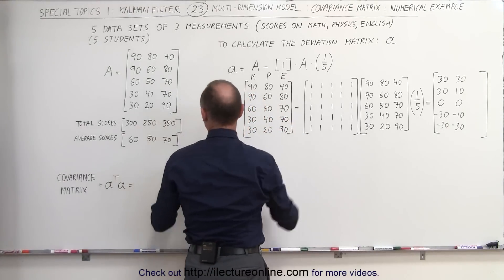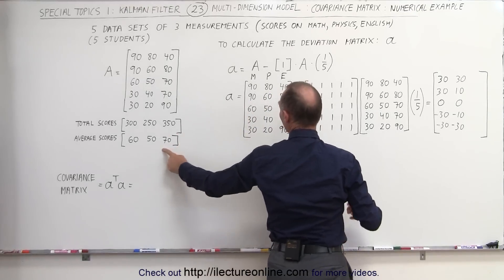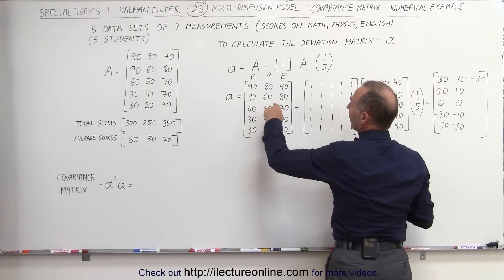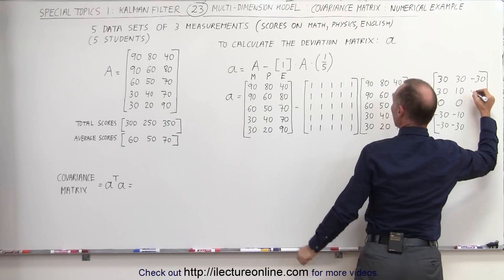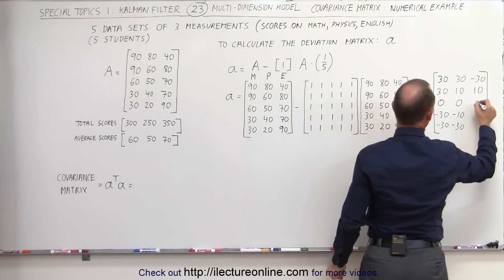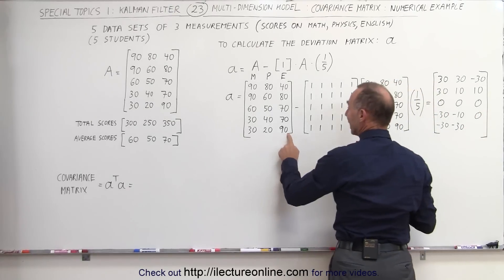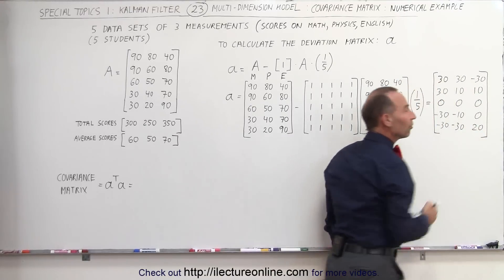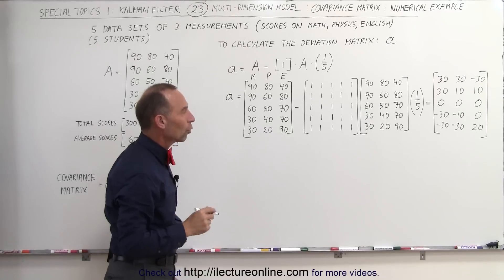Finally, we do it again for English. The average score is 70. So we have 40 minus 70, that is minus 30. Then 80 minus 70 is plus 10. Then 70 minus 70 is 0. Then 70 minus 70 is 0. And 90 minus 70 is positive 20. So those are the differences between the mean and the individual scores.